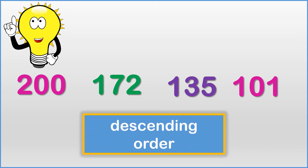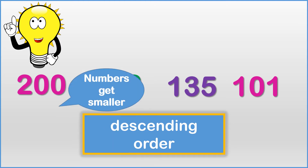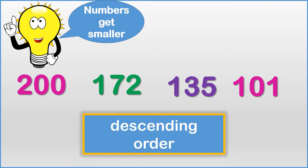These numbers are arranged in descending order. We started with the biggest number and ended with the smallest number. Remember, descending order — the numbers get smaller.